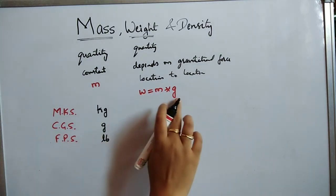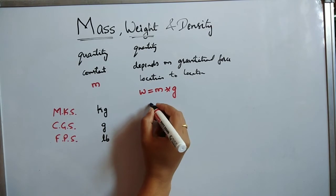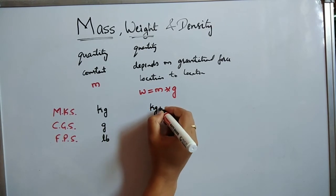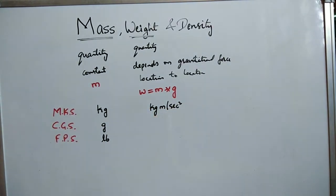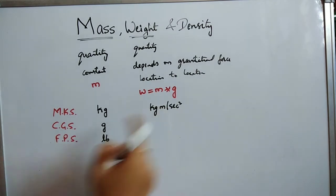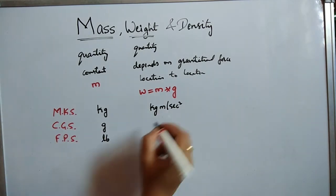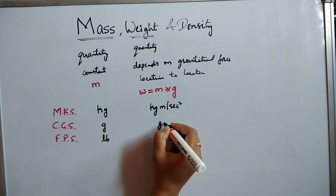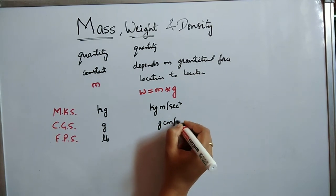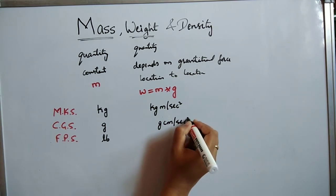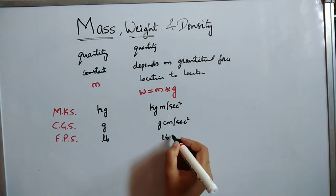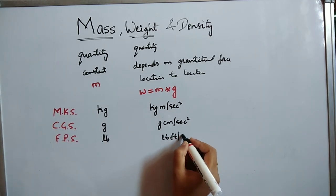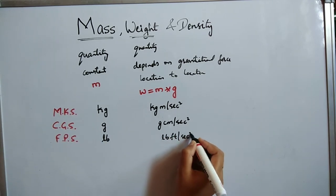Since weight depends on gravitational force also, in the MKS system the unit is kg·m/s². In the CGS system, it is g·cm/s². In the FPS system, it is pound·feet/s².